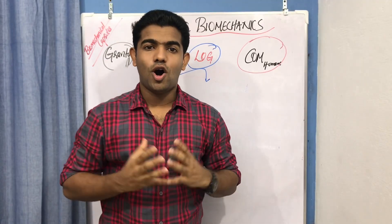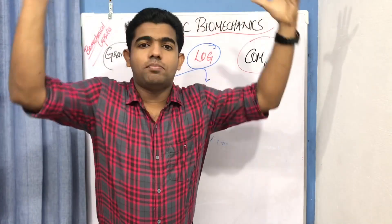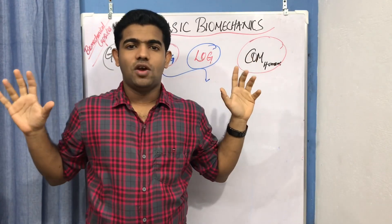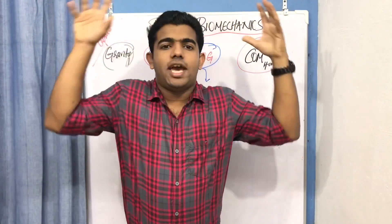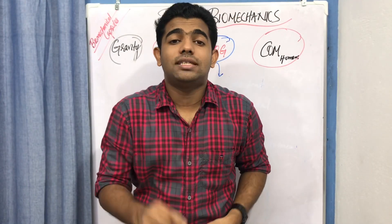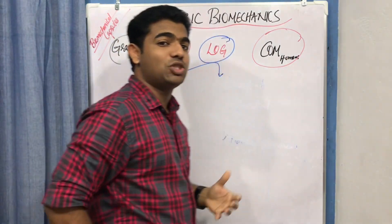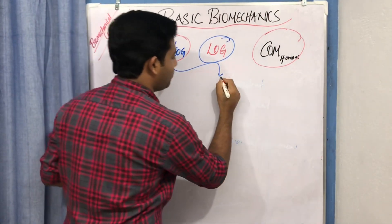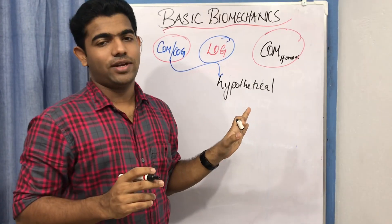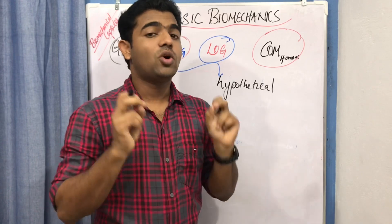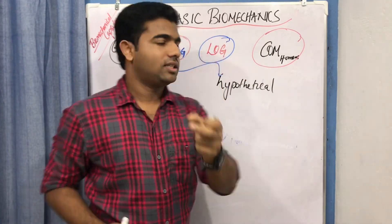More clearly, the center of mass is a hypothetical — meaning imaginary — point in which the entire mass of an object is assumed to be concentrated. For example, if gravity is acting at a certain level in my body, I assume my entire body mass is concentrated at that single point. It is an imaginary, hypothetical assumption that simplifies our study.